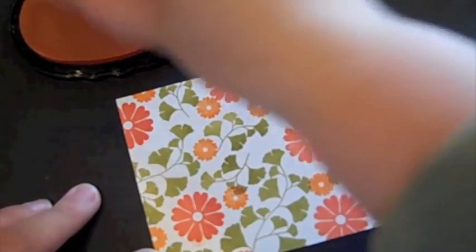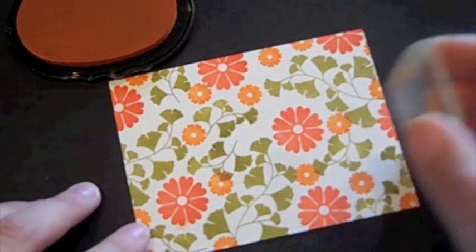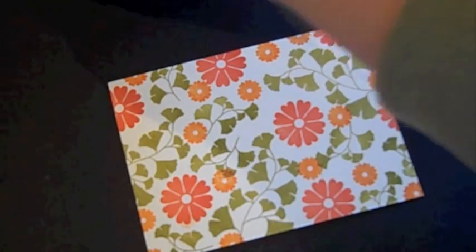Just kind of fill in all the blank spots. And I mean, you don't have to get every single one with this go-around because we're going to be adding some more color in a second. So there's my Orange Zest flowers.